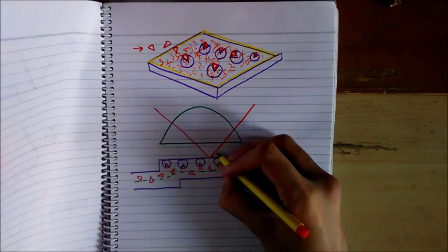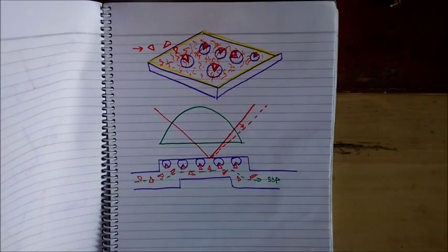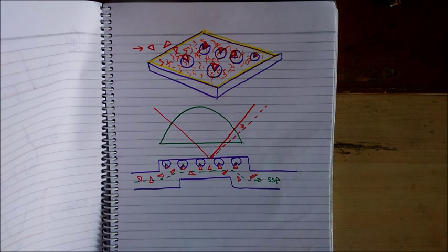refractive index close to the surface changes, which changes the angle of minimum intensity. The change in SPR angle is proportional to mass of material bound.